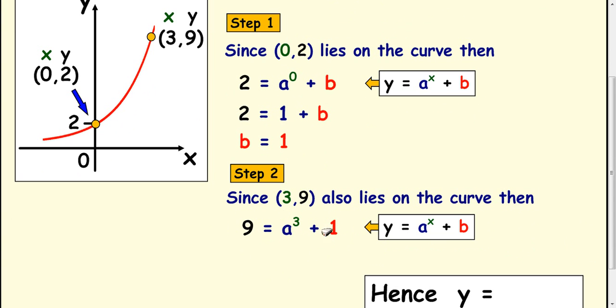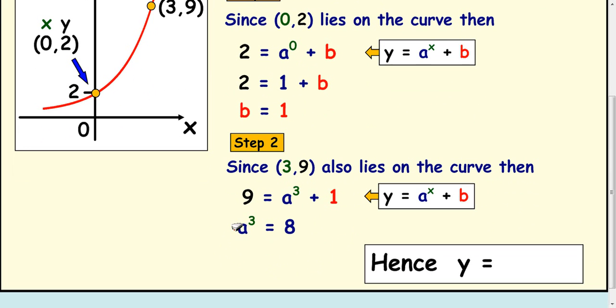So we've got an equation, we need to solve it. So subtract 1 from each side. We've got a cubed equals 8 and then cube root. So what times what times what makes 8? Well, it's 2. So this equation is y equals 2 to the power of x plus 1.